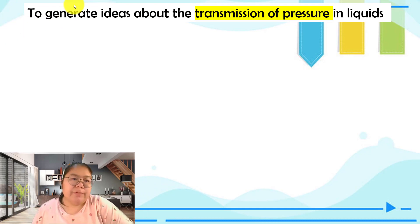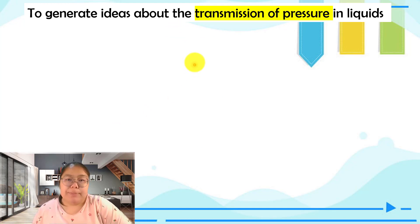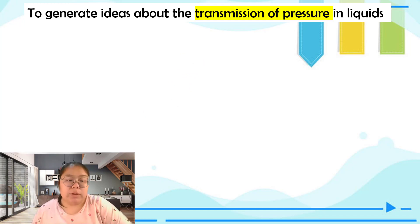First, we need to generate the idea about the transmission of pressure in a liquid. This is still related to liquid pressure, but now we need to transfer pressure from one location to another. Let's see the idea about this transmission.